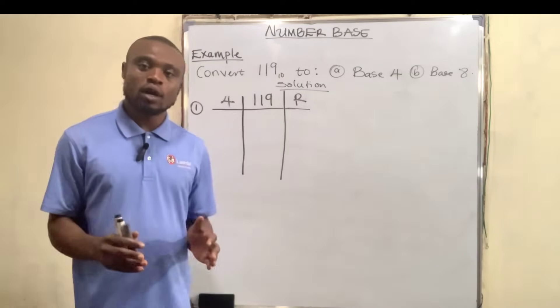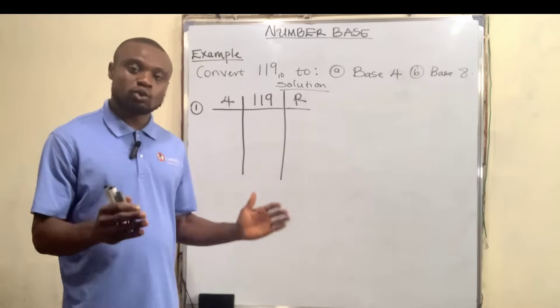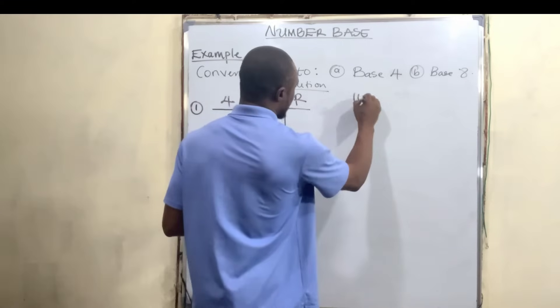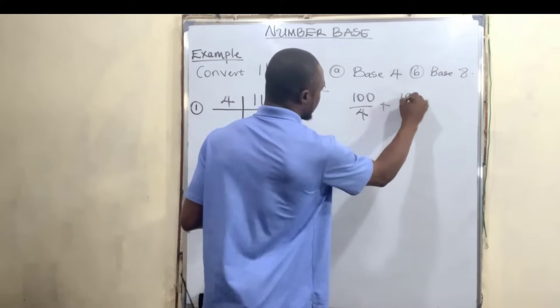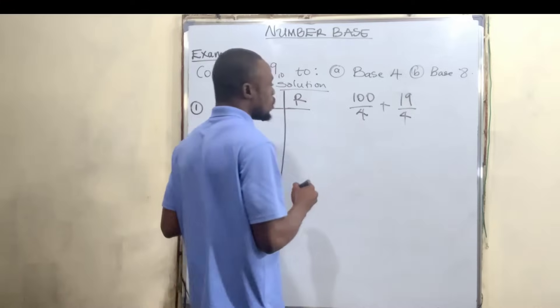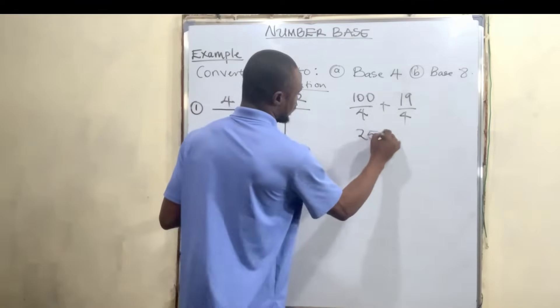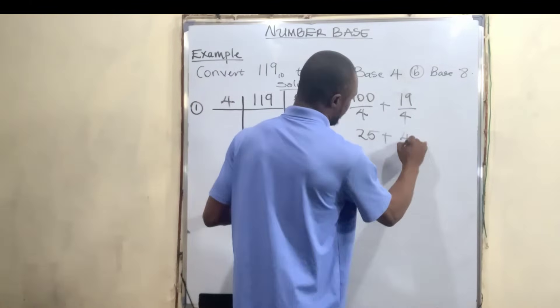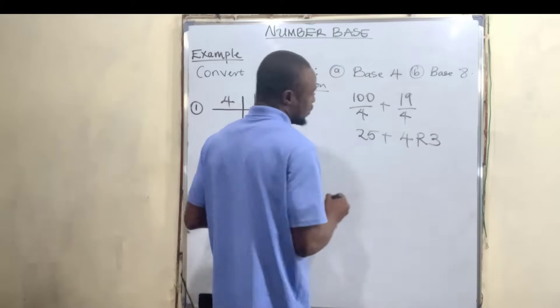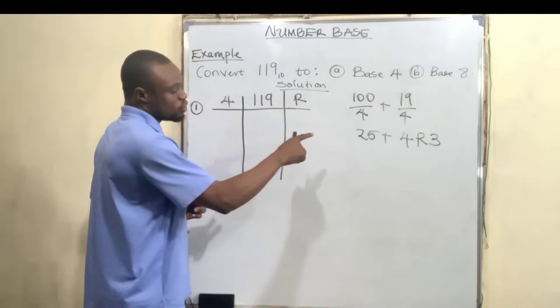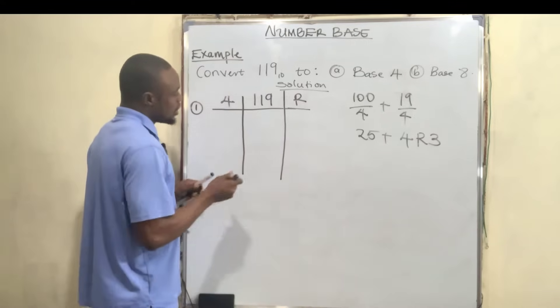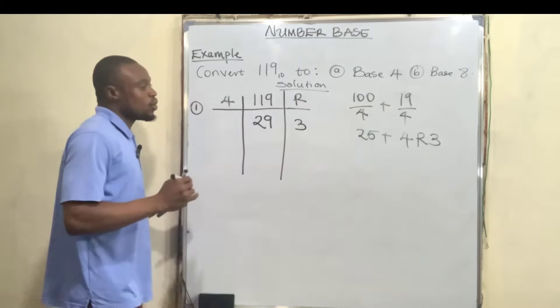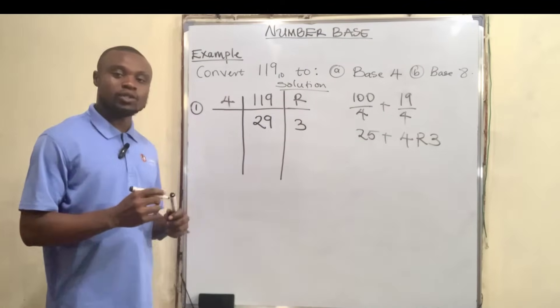119 divided by 4. The simple way to do it is by splitting the number into two: 100 divided by 4 plus 19 divided by 4. 100 divided by 4 is 25, 19 divided by 4 is 4 remainder 3. If you add 4 to 25, you have 29. So 119 divided by 4 is 29 remainder 3.